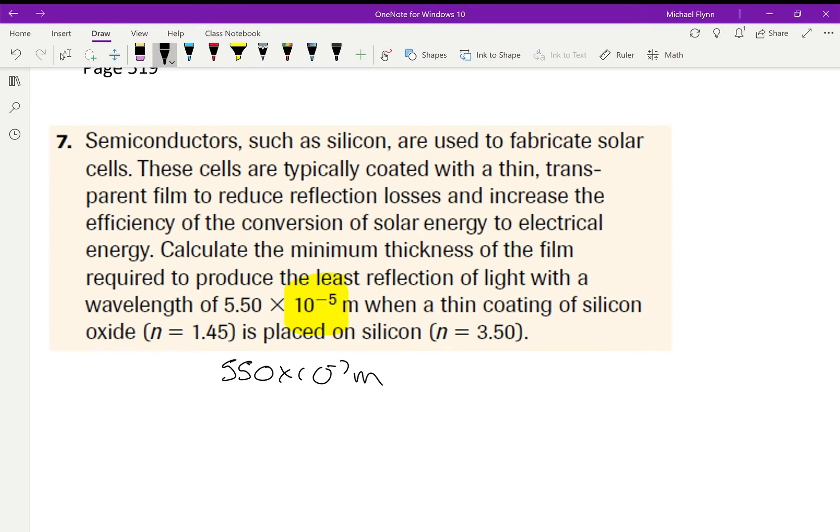Guessing. Okay, there. But anyway, that seems wrong to me. When a thin coating of silicon... Okay, that would put it right in the middle of the visible spectrum, by the way. Silicon oxide is placed on a wafer of silicon, n equals 3.5. All right.